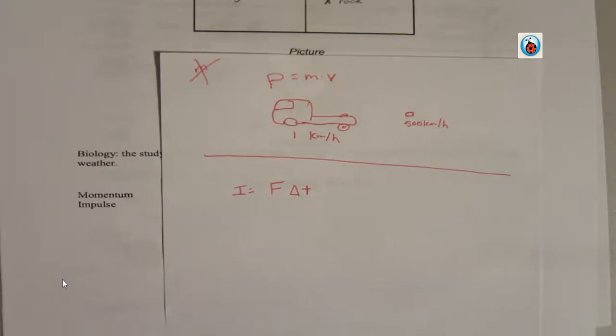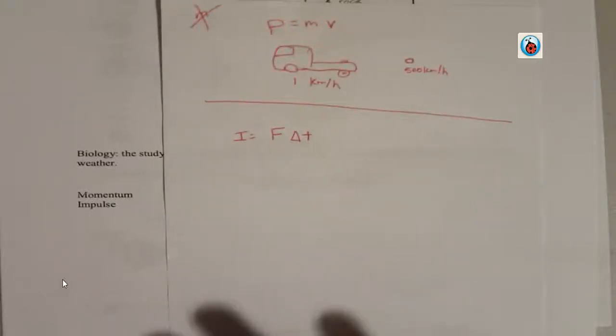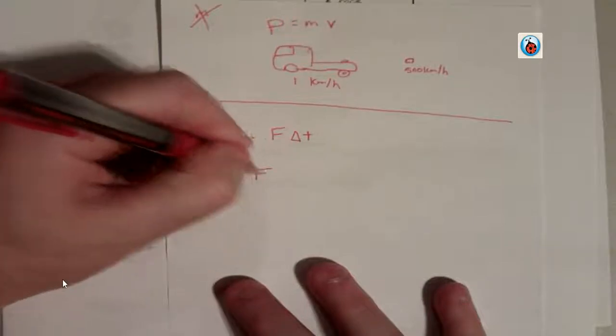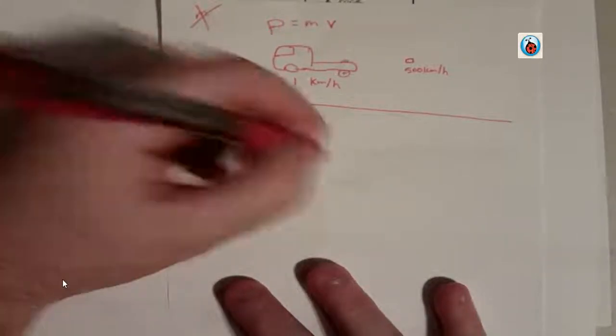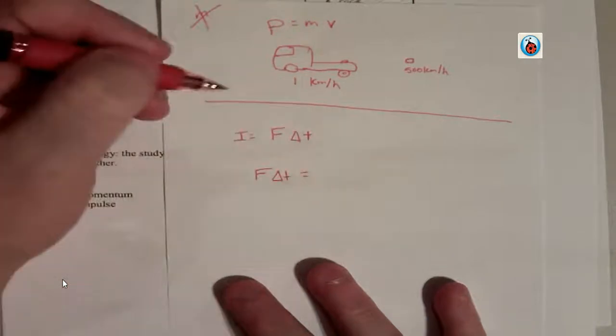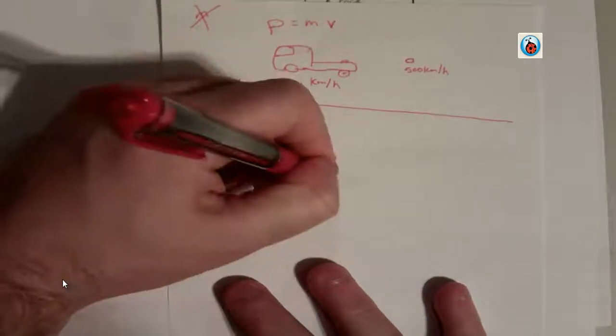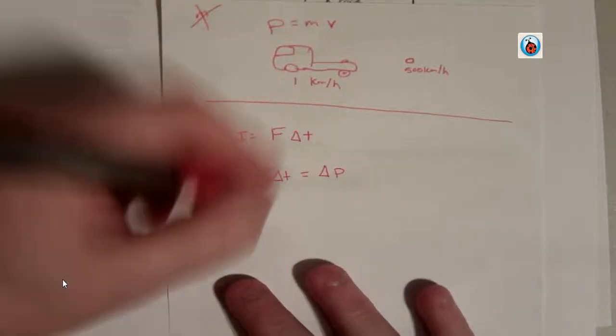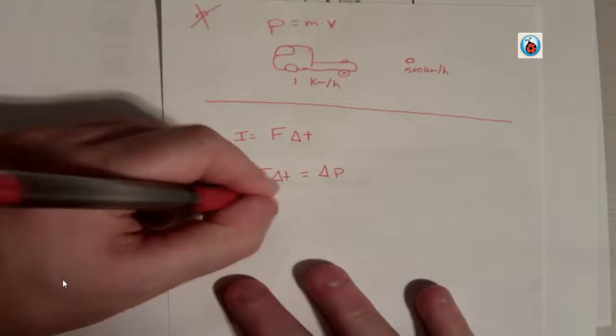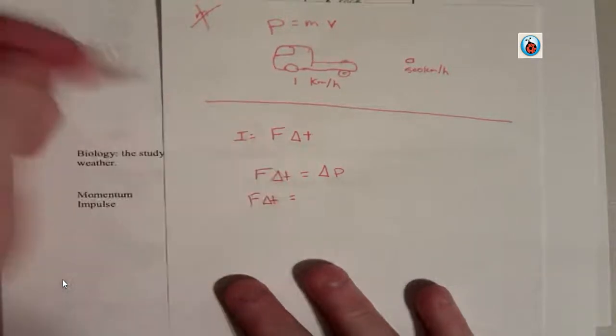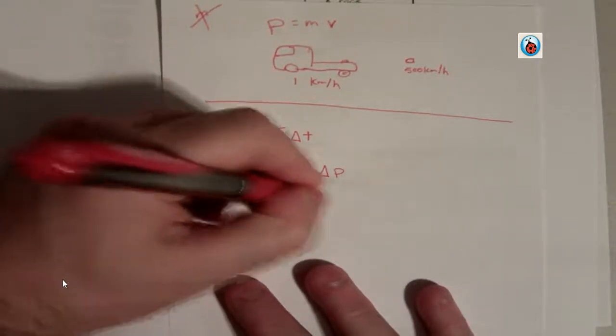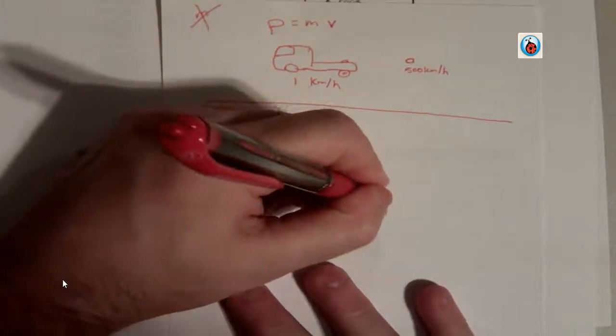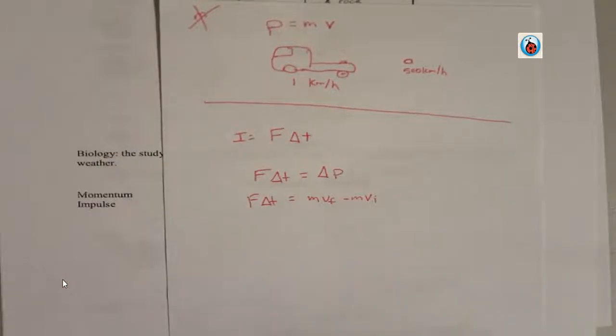The impulse momentum theorem, important to know, pretty much states that they're equal. So, if you have force times a change in time, it will equal our change in momentum, or let's rewrite this. Force times change in time equals mass times final velocity minus mass times initial velocity.